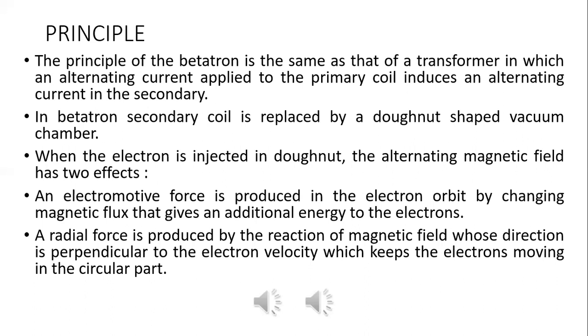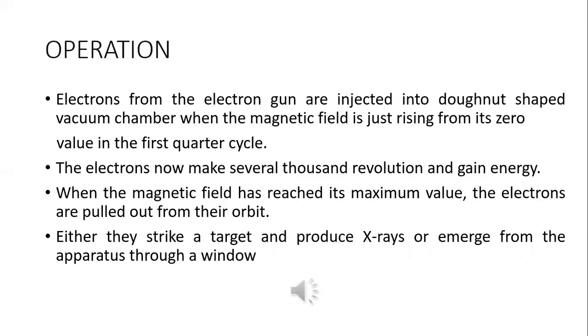Electrons from the electron gun are injected into the doughnut shaped vacuum chamber when the magnetic field is just rising from its zero value in its first quarter cycle. The magnetic field varies according to the alternating current. The electrons then make several thousand revolutions and gain energy.